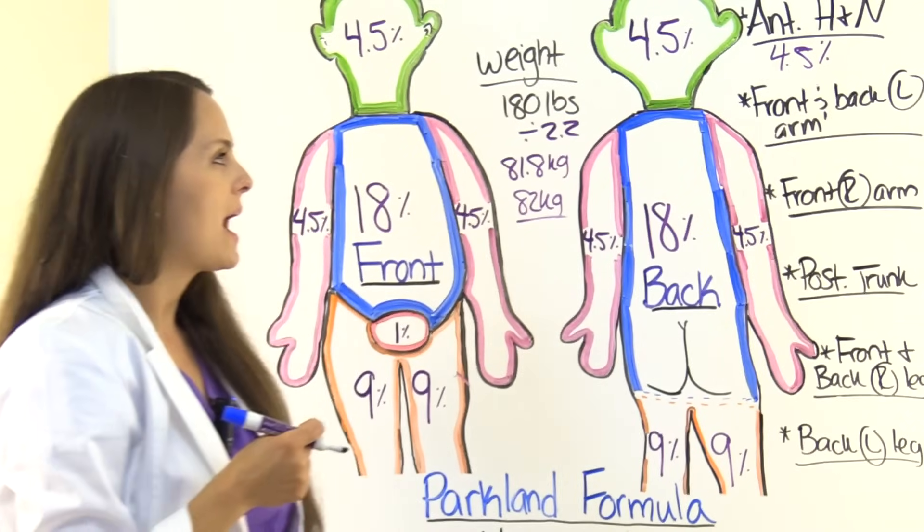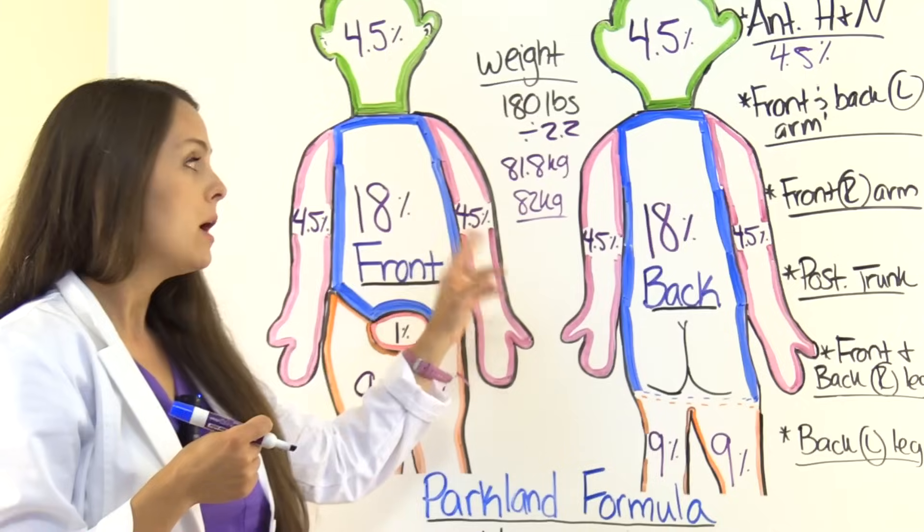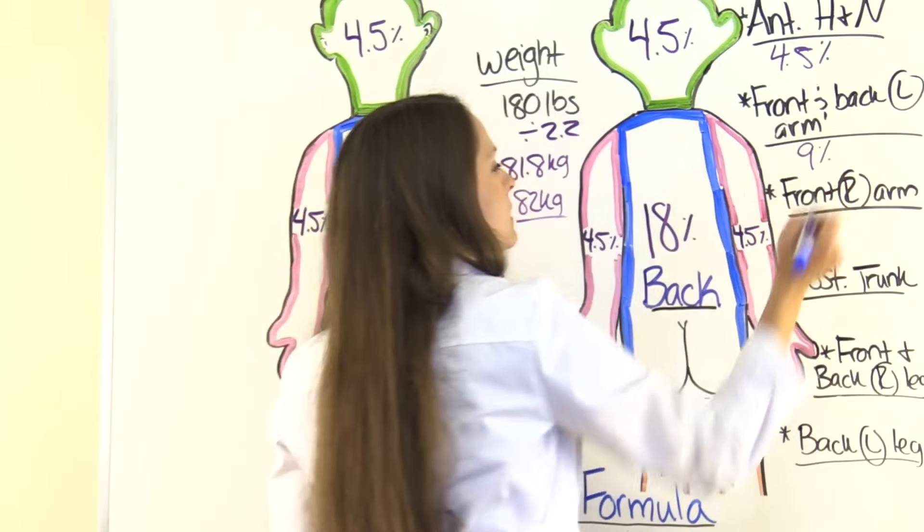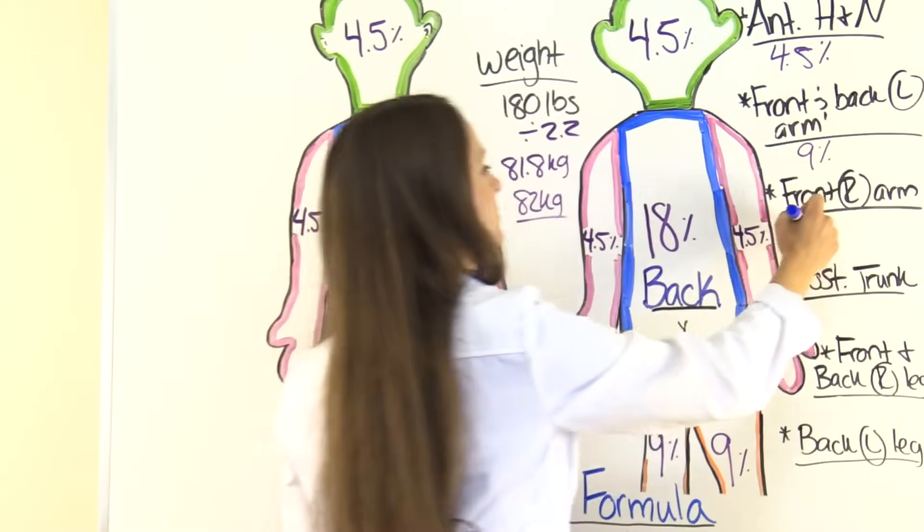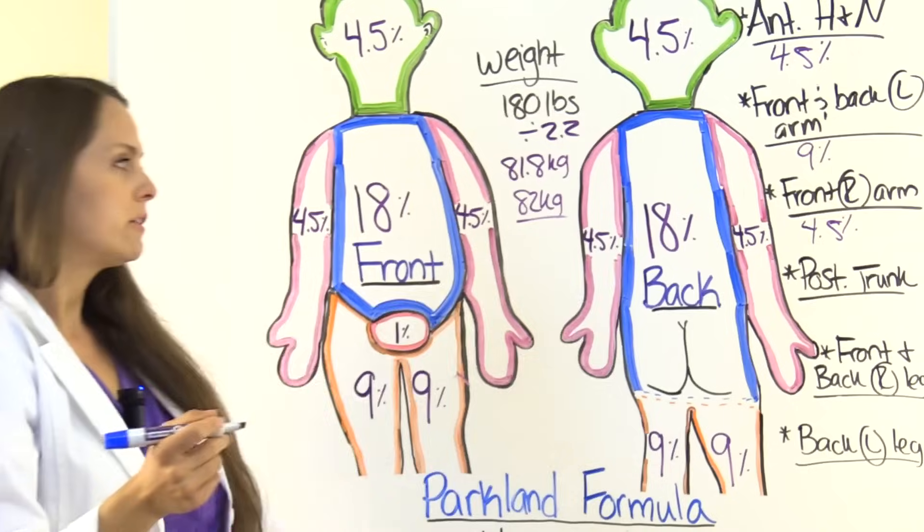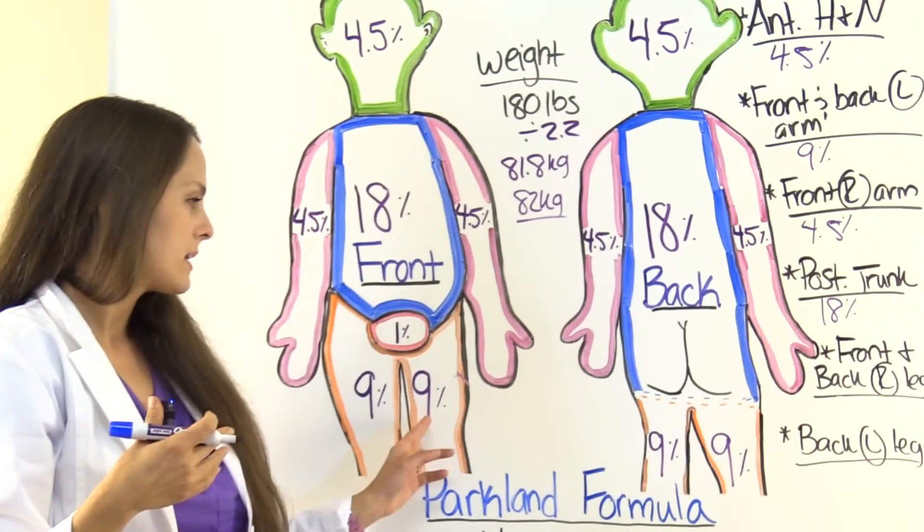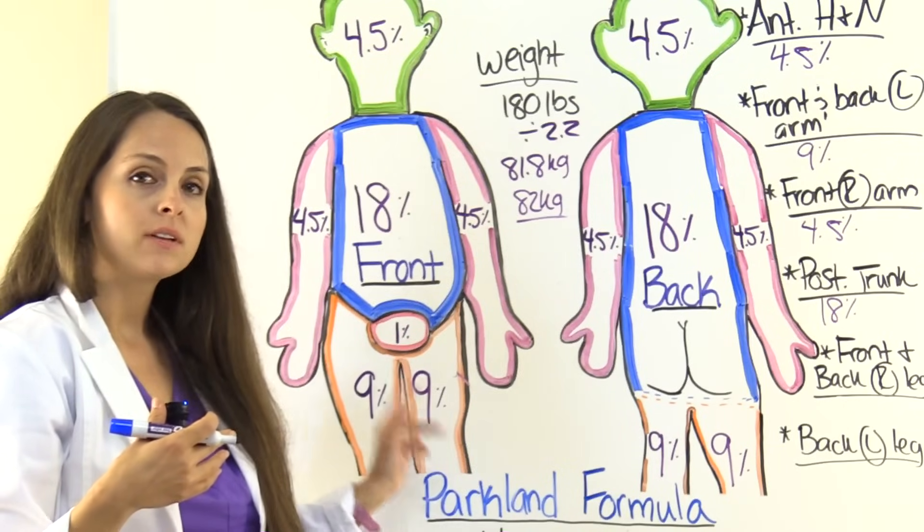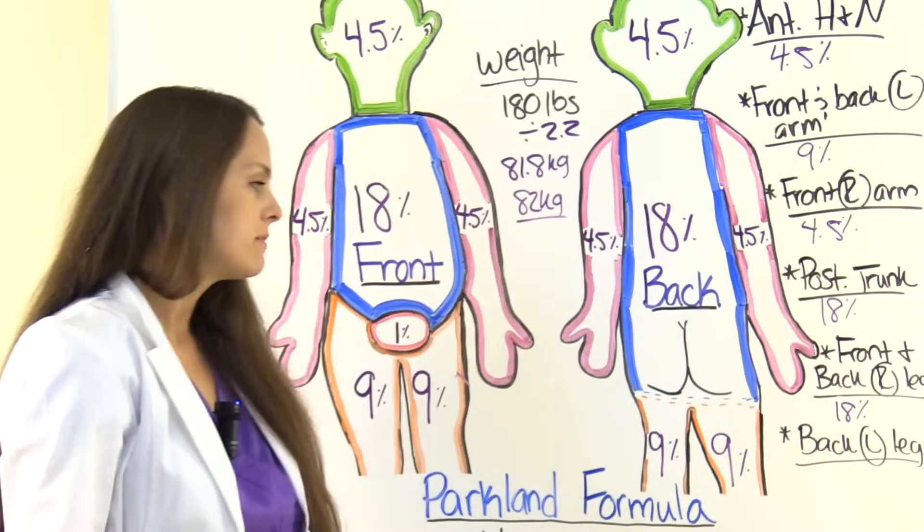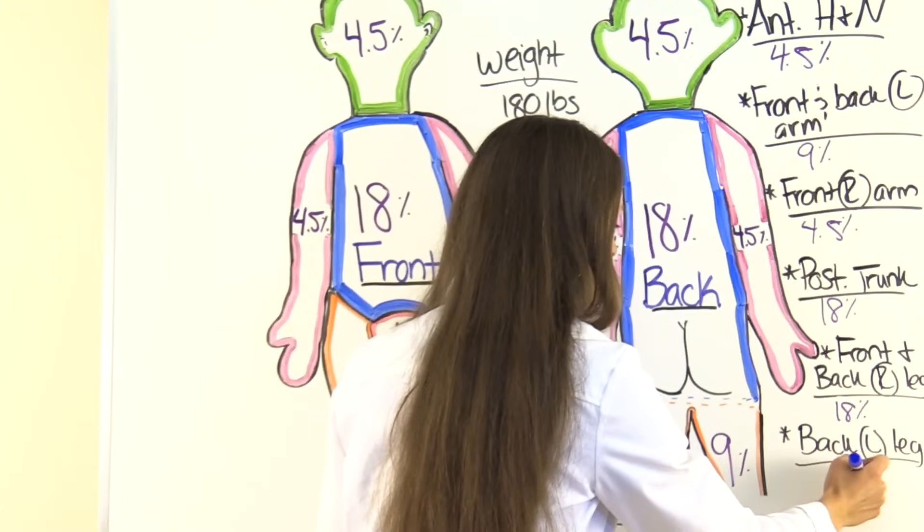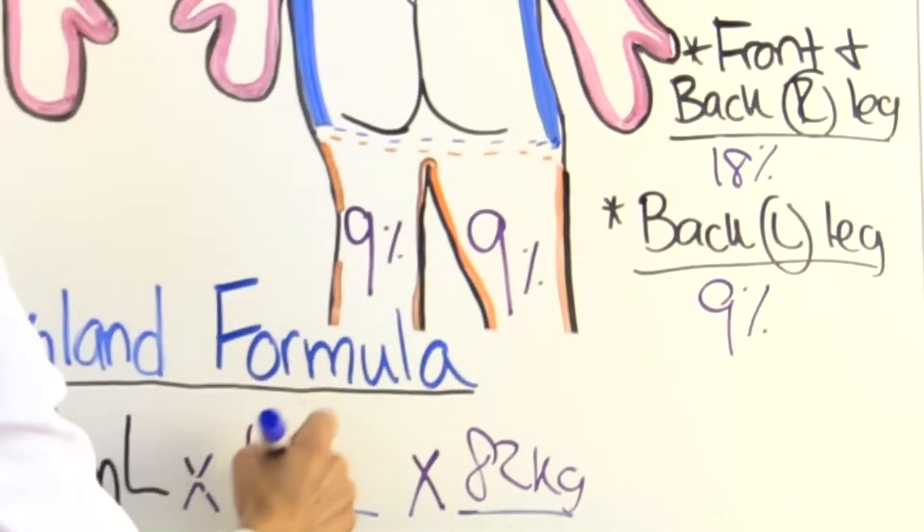Okay, we have the front and the back of the left arm. So we're looking at the front and the back. The left arm, each side's worth 4.5%. 4.5 plus 4.5 equals 9%. The front of the right arm equals 4.5%. The posterior trunk equals 18%. The front and the back of the right leg. So each side equals 9. So 9 plus 9, because we're talking about the front and the back, is 18%. And then we have the back of the left leg, and that equals 9%. So when we add all that up, what do we get for our total surface body area that is burned? We get 63%.